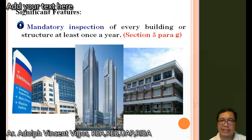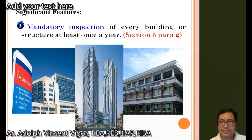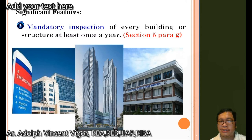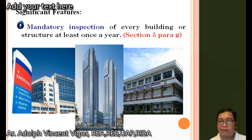Another significant feature is the mandatory inspection of every building or structure at least once a year, under Section 5 paragraph. This is an important task because it means that when you build a building or structure, fire safety becomes part of the building's maintenance and should be part of its budget. Without mandatory inspection, business owners may become relaxed in complying with fire code requirements.